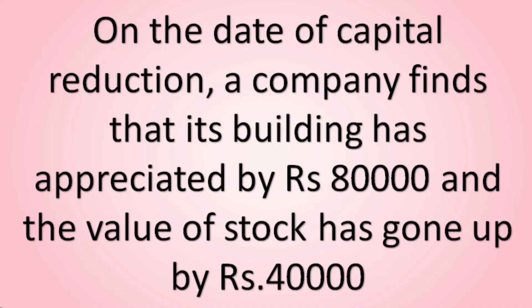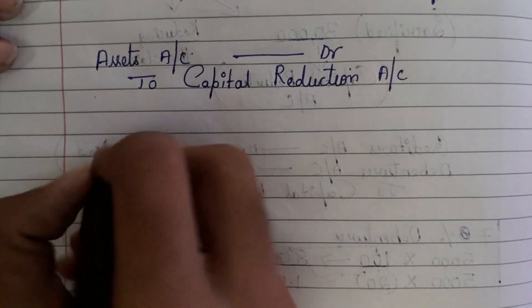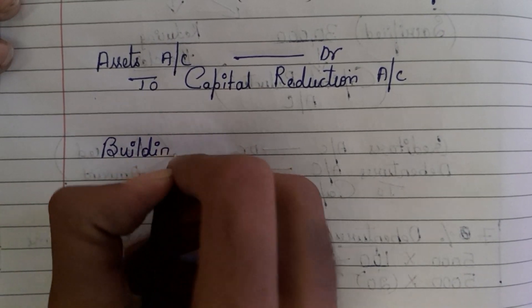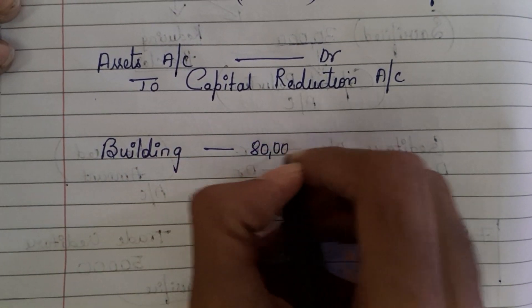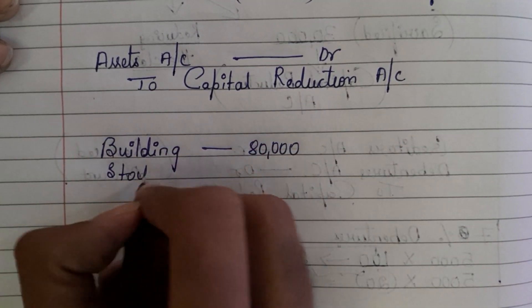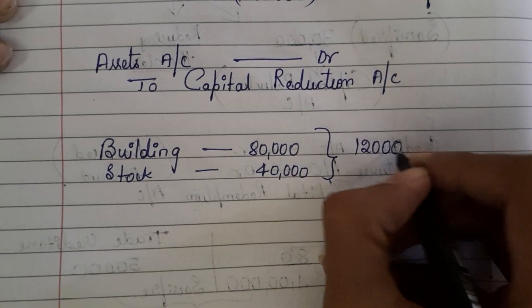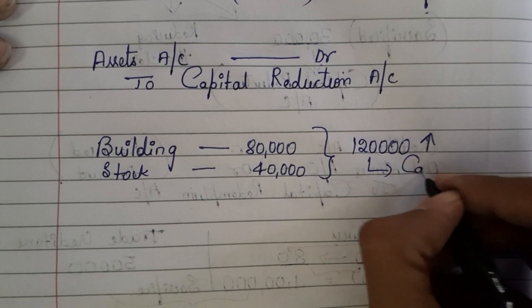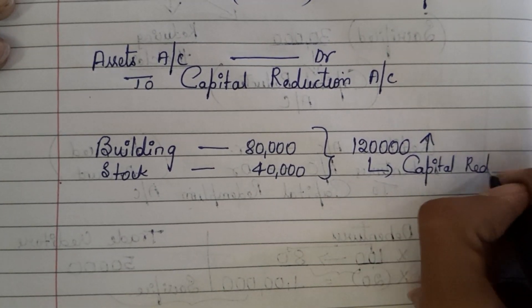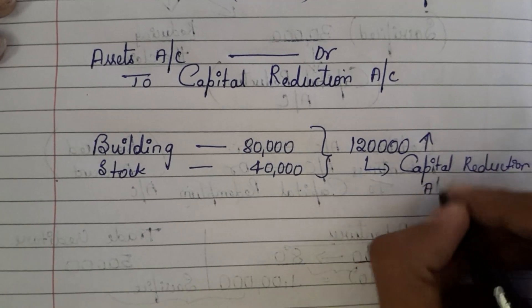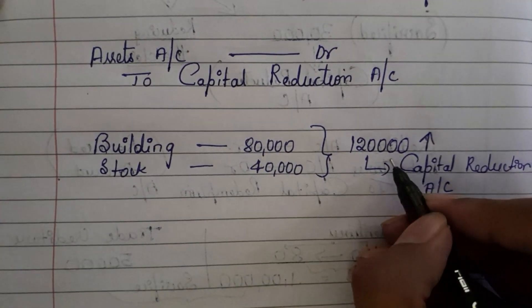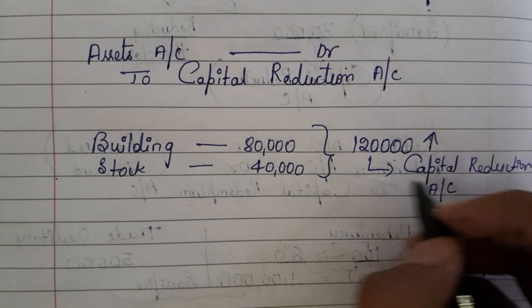On the date of capital reduction, a company finds that its building has appreciated by rupees 80,000 and the value of stock has gone up by 40,000. The building value has been increased by 80,000 and the value of stock has gone up by 40,000. Total 1 lakh 20,000 — there is an increase. This increase we need to transfer into capital reduction account.